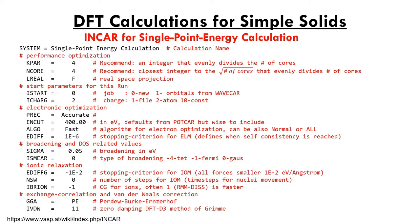The next tags are NSW and IBRION. NSW equals 0 means that the energy of the electron density is minimized for a single given arrangement of fixed nuclei — this is known as a single-point calculation, as the coordinates of the nuclei aren't allowed to vary. IBRION tells VASP to perform a single-point calculation if IBRION equals -1, a molecular dynamics calculation if IBRION equals 0, or a relaxation calculation for IBRION equal to 1 through 8.